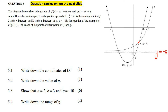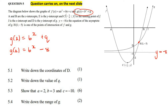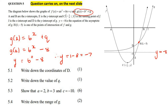First question for one mark: write down the coordinates of d. So d is part of the exponential. Because the asymptote is at minus 8, that's your q value. To find a y-intercept, you just make x equal to 0. With an exponential, something to the power of 0 is 1, so y is going to be 1 minus 8, which is minus 7. So the coordinates of d are x equals 0 and y equals minus 7.